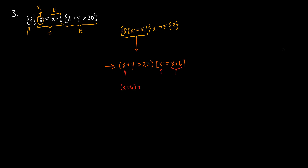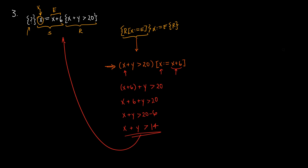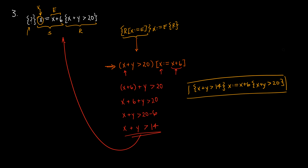Performing the substitution, we replace the one occurrence of x with (x + 6), giving us (x + 6) + y > 20. Removing unnecessary parentheses: x + 6 + y > 20, which is the same as x + y > 14 after subtracting 6 from both sides. So the complete Hoare triple is: {x + y > 14} x := x + 6 {x + y > 20}.